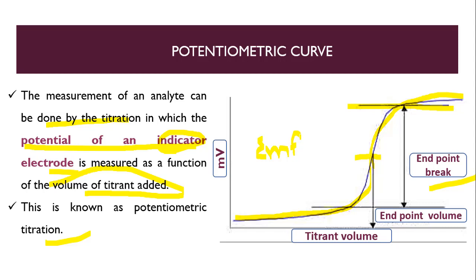After each addition what we have to do is give sufficient time to reach a constant potential before the next addition. So whatever value of potential or EMF we are getting, that we can measure by the recording device or we can say a pH meter. So this is how the potentiometric titration is done, and this is our potentiometric curve.